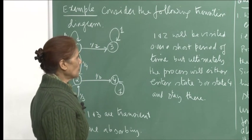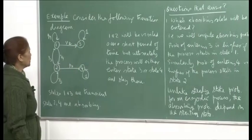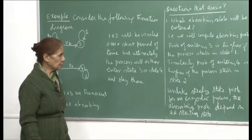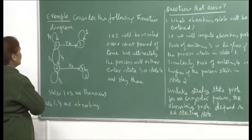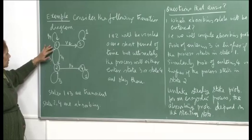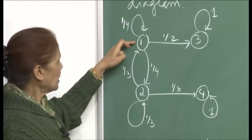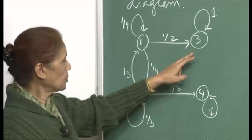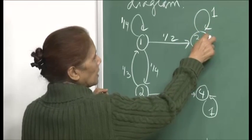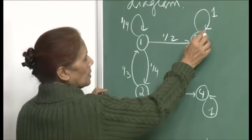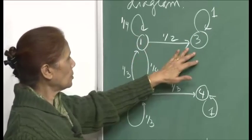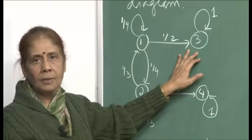I will continue the discussion with transient and absorbing probabilities, that is your reducible Markov chains. Look at this transition diagram. There are four states, and from state 1, you can either come back to 1 or go to 3. Once you reach 3, the probability of returning to itself is 1, so this is a certain event. Once the process from 1 goes to 3, the process will stop there.